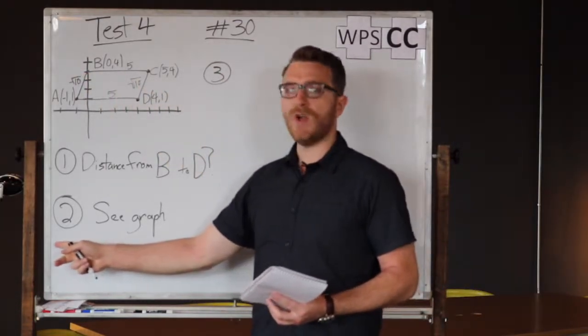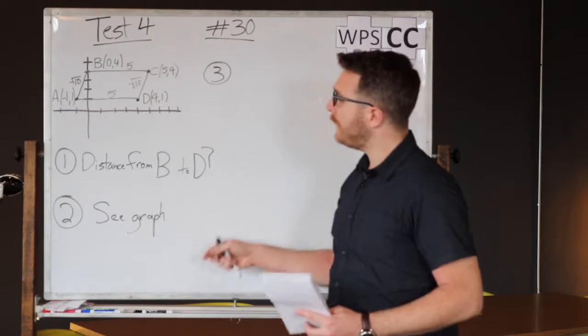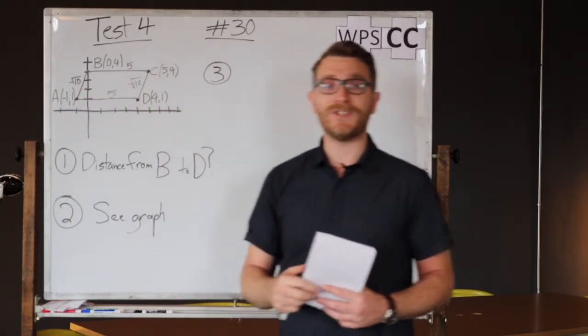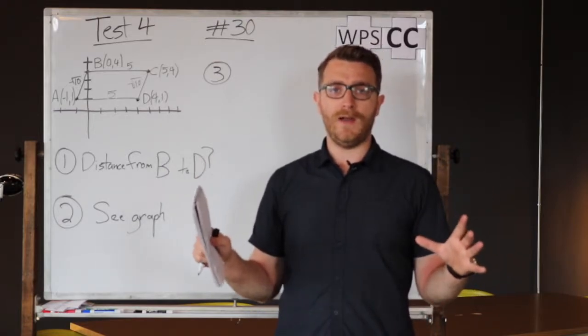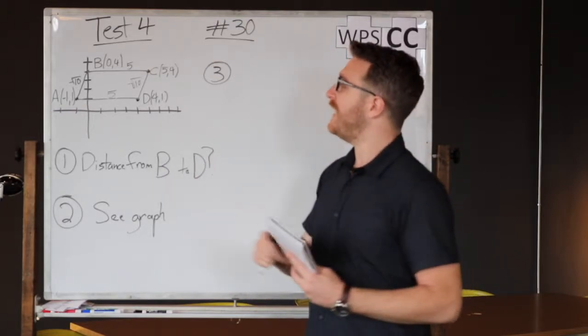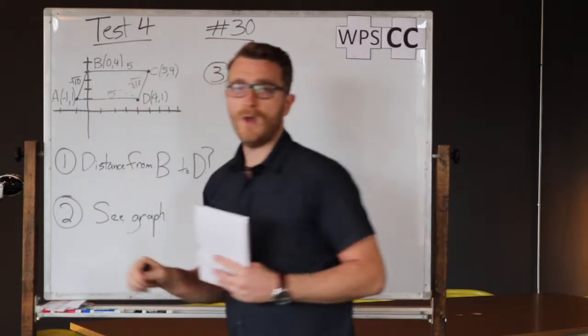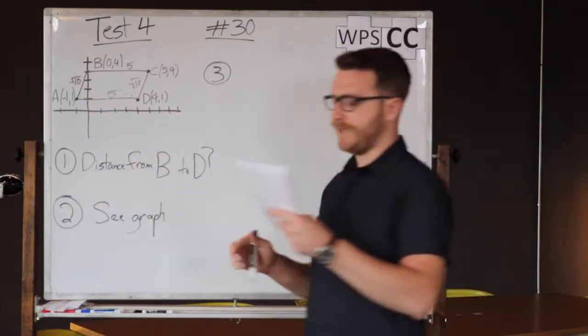Second step of our word problem strategy is always what do we already know? Over here in the graph, we know the coordinates of all four points and the distance of all four sides on this parallelogram. If we want to find the distance between two of these corners, we're going to need the distance formula.